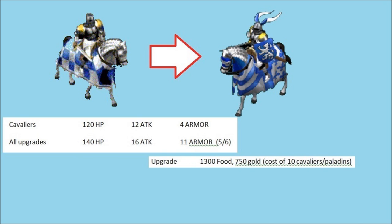And if you act now for the low, low price of 1,300 food and 750 gold, which is obviously the cost of 10 Cavaliers, you can upgrade them all to Paladin. For the purposes of this video, we're just going to ignore that food cost, because really by the time you're making Paladins, you should have enough farmers that food isn't really the problem. The problem is gold on the map.